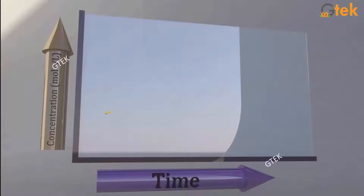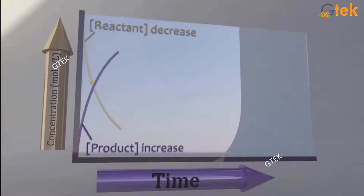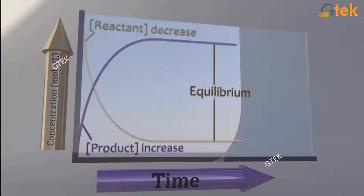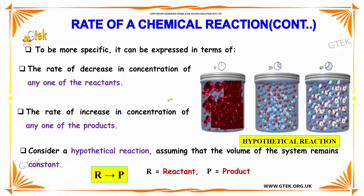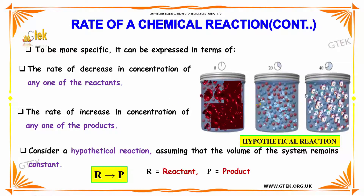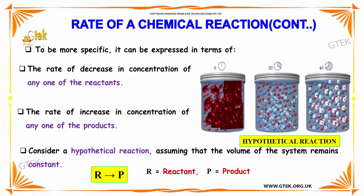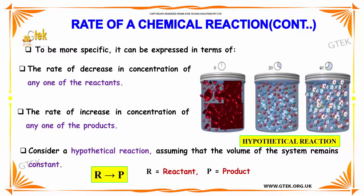I am putting up a 3D chart of how the reactants mingle to create the product. You are able to see the reactant will start decreasing and the product starts increasing. At one stage it becomes equilibrium — both become constant. This is how an equilibrium reaction will be. To be more specific, it can be expressed in terms of the rate of decrease in concentration of any one of the reactants, or the rate of increase in concentration of any one of the products.